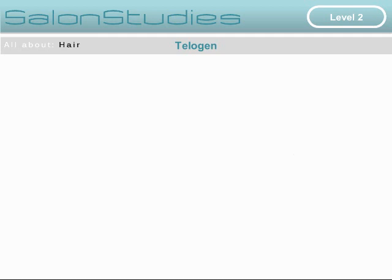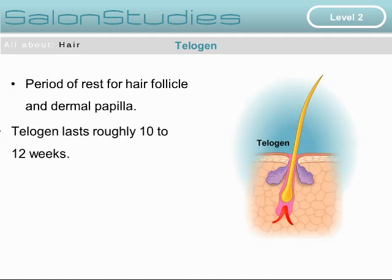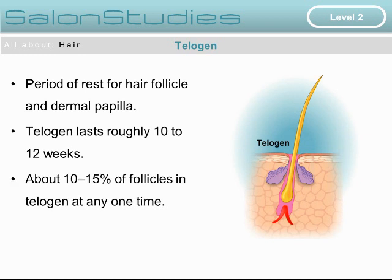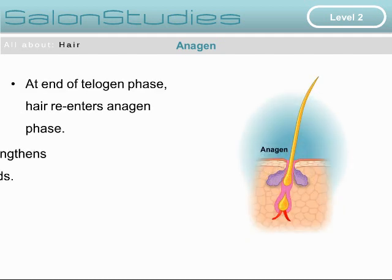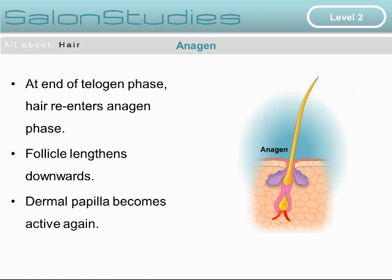The telogen phase. This is a period of rest for the hair follicle and the dermal papilla, and the telogen phase roughly lasts for 10 to 12 weeks. About 10 to 15% of the hair follicles are in the telogen phase at any one time. Then the anagen phase starts over again — hair re-enters the anagen growth phase, the follicle lengthens downwards, and the dermal papilla becomes active again.